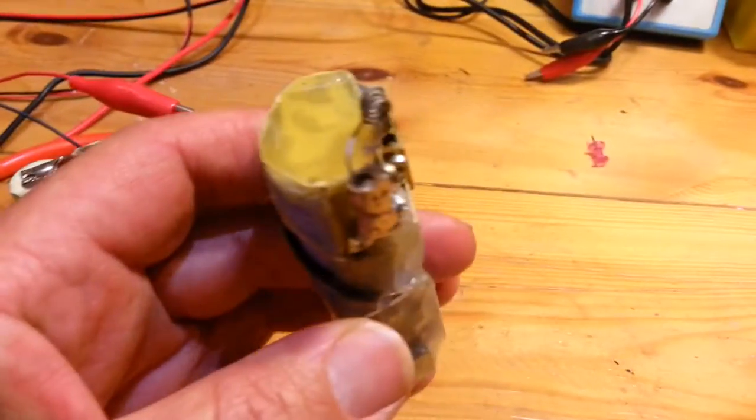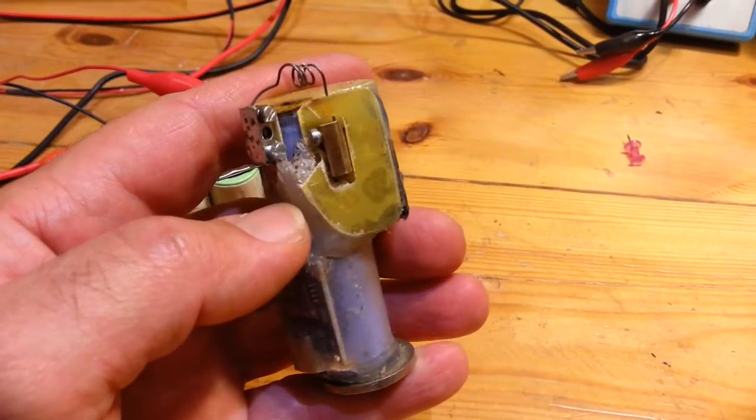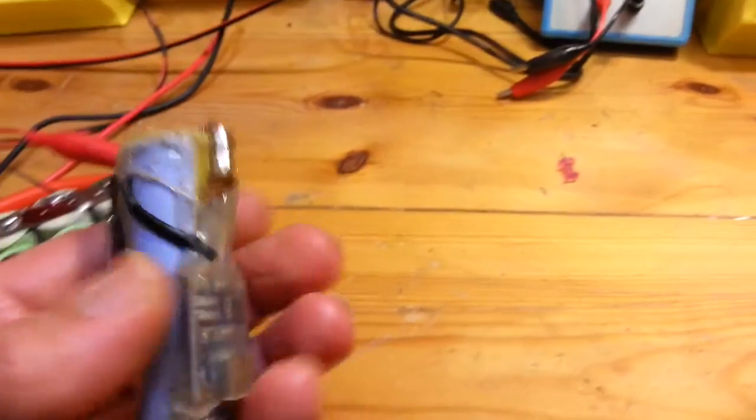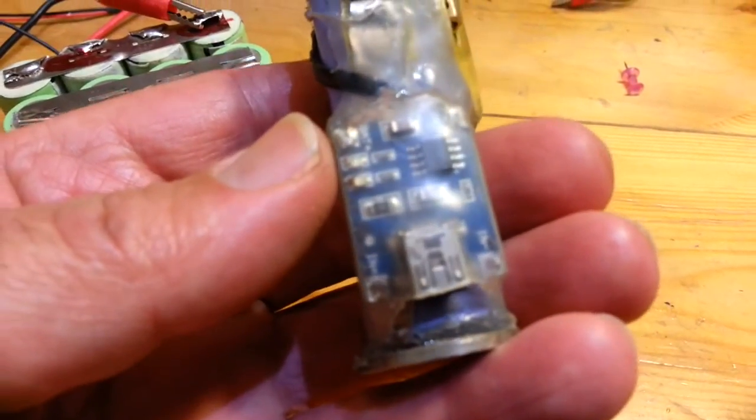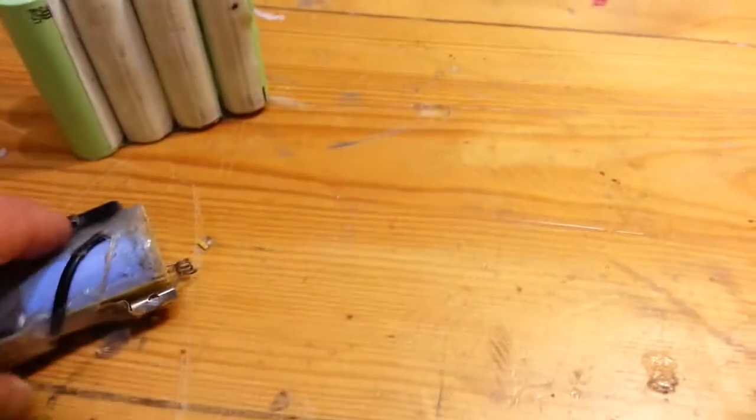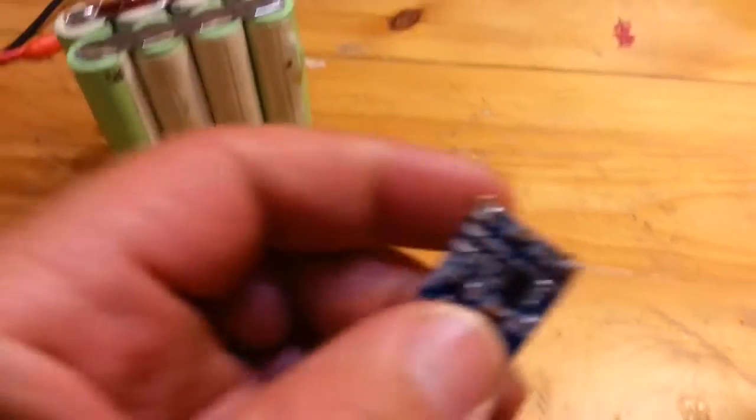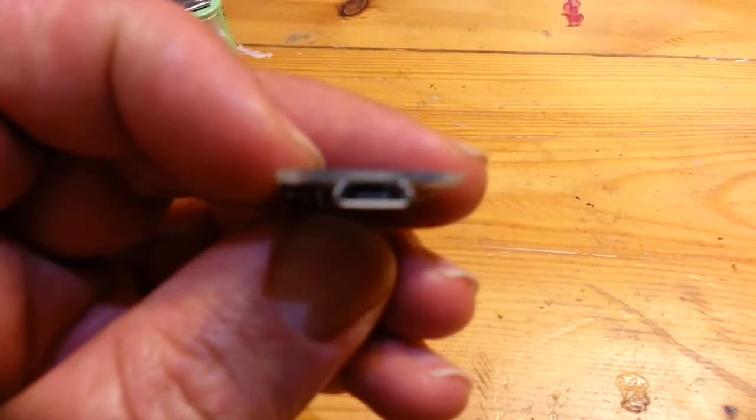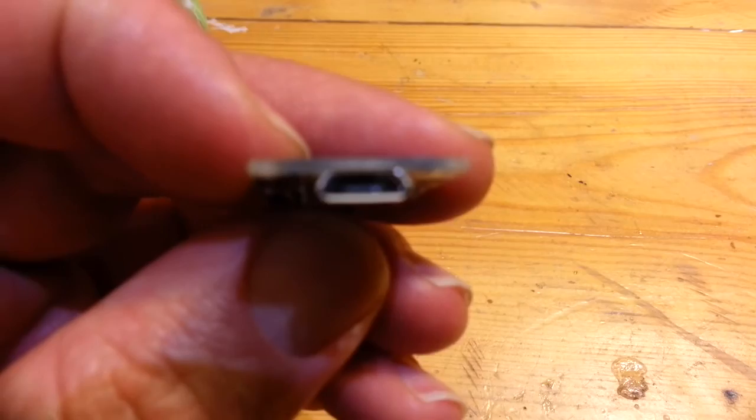So this is one part of the electric lighter. The other part is this charging. And I connected the charging board. This is a very simple board that you can buy from AliExpress or eBay.